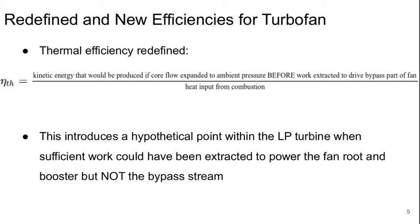If we redefine our thermal efficiency as the kinetic energy that would be produced if the core flow were expanded to ambient pressure before the work is extracted to drive the bypass part of the fan, over the heat input for combustion, this introduces a hypothetical point somewhere within the low pressure turbine where sufficient work could have been extracted to power the fan for the part where flow goes into the core and booster, but not the bypass stream.